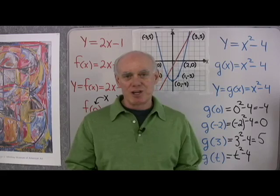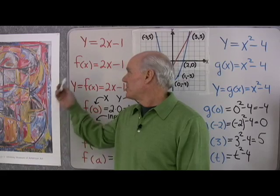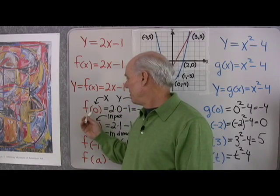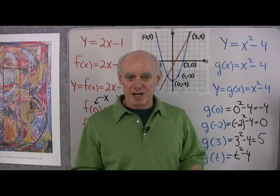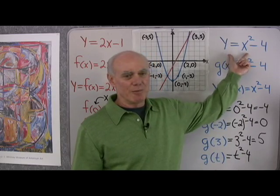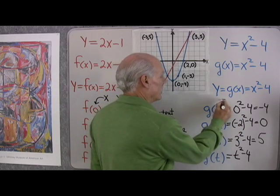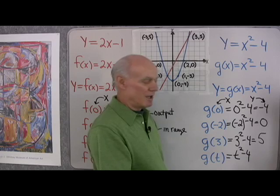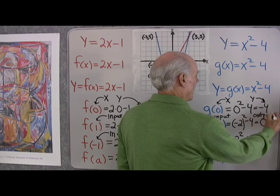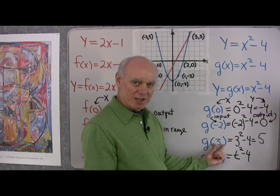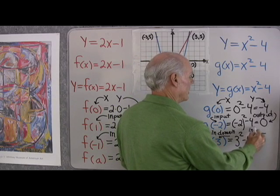What's nice about function notation is this: I have two functions — y equals 2x minus 1 and y equals x squared minus 4. With the notation f of x and g of x, when I say f of 0 that means I want the first function, and g of 0 means I want the second function. It saves time — I don't have to specify which equation I'm using. The numbers going in are values of x and are in the domain; what comes out are values of y and are in the range.